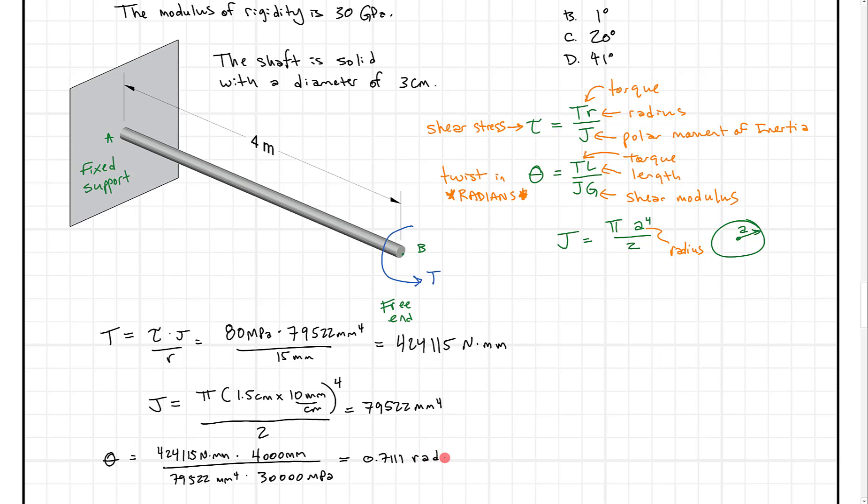So don't forget the twist on the twist equation. This is in radians which we need to convert to degrees 180 divided by pi. And the total number of degrees we get is 40.7 degrees. Alright so that's pretty cool because that's our answer.